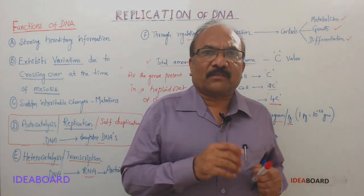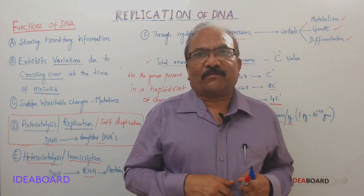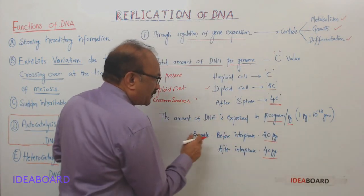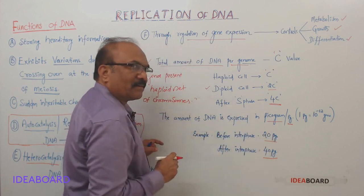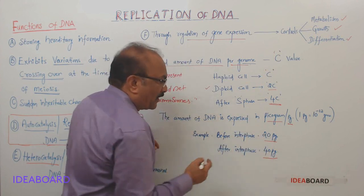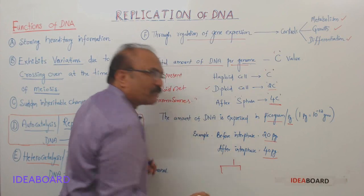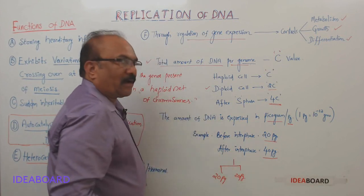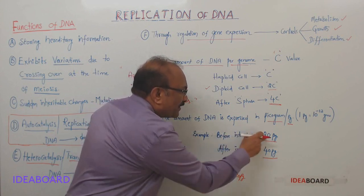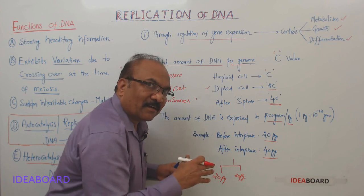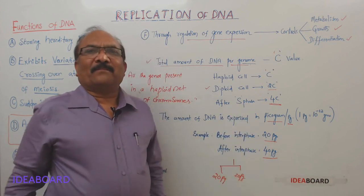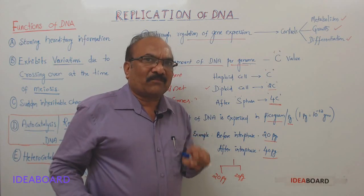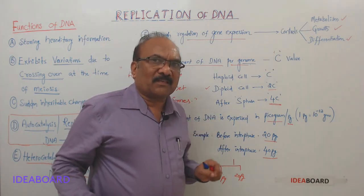During mitosis, two daughter cells are formed. If the mother cell has 20 picograms before interphase, after interphase it becomes 40 picograms, and when the two daughters are formed, each daughter gets 20 picograms. The amount of DNA in the mother cell and each daughter cell is the same — 20 picograms — because of the doubling that happened during the S phase. We call that process replication of DNA.